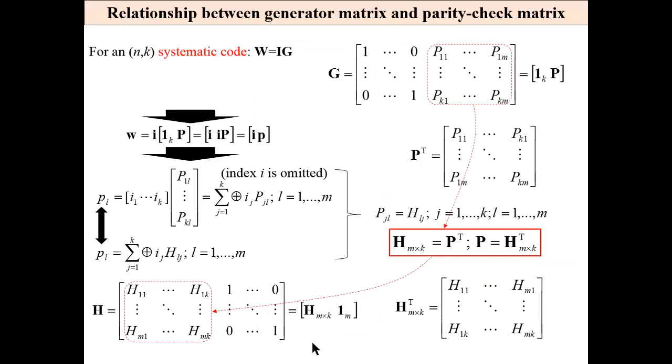If we have a systematic code, then it is easy to prove that from generator matrix it is easy to find the parity check matrix and vice versa. So these two descriptions are equivalent. Sometimes we are using generator matrix for some codes. For some other codes, the use of parity check matrix is more reasonable.